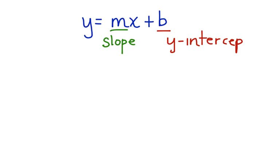When an equation is written in this form, you can graph it simply by identifying the slope and the y-intercept. Let's take a look at an example.